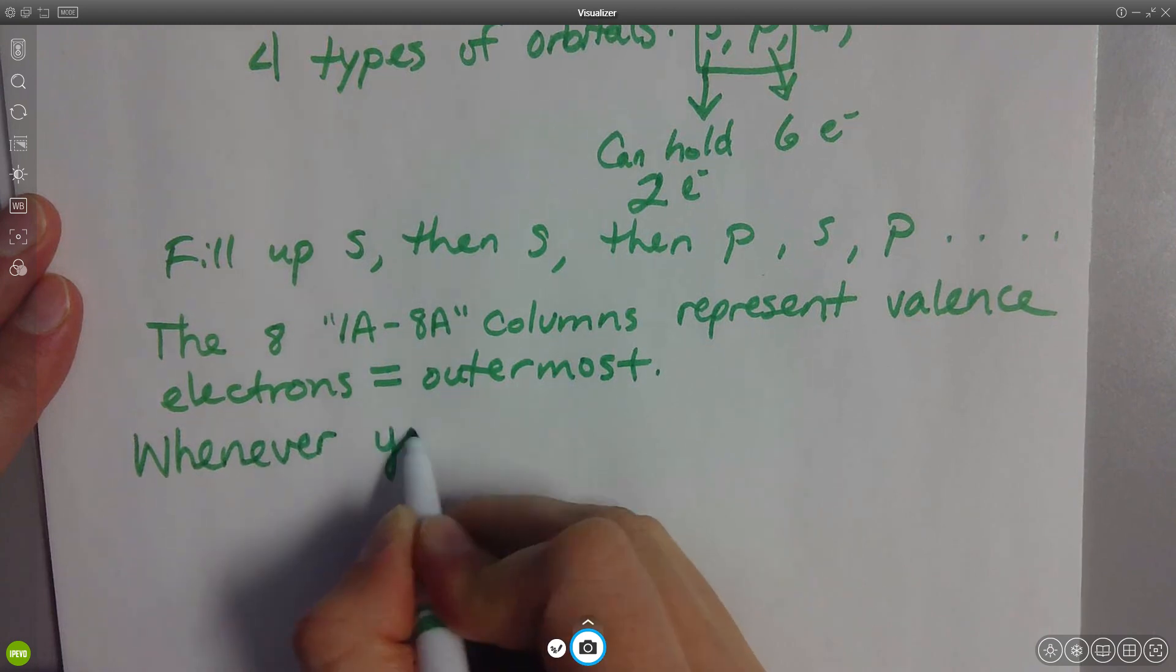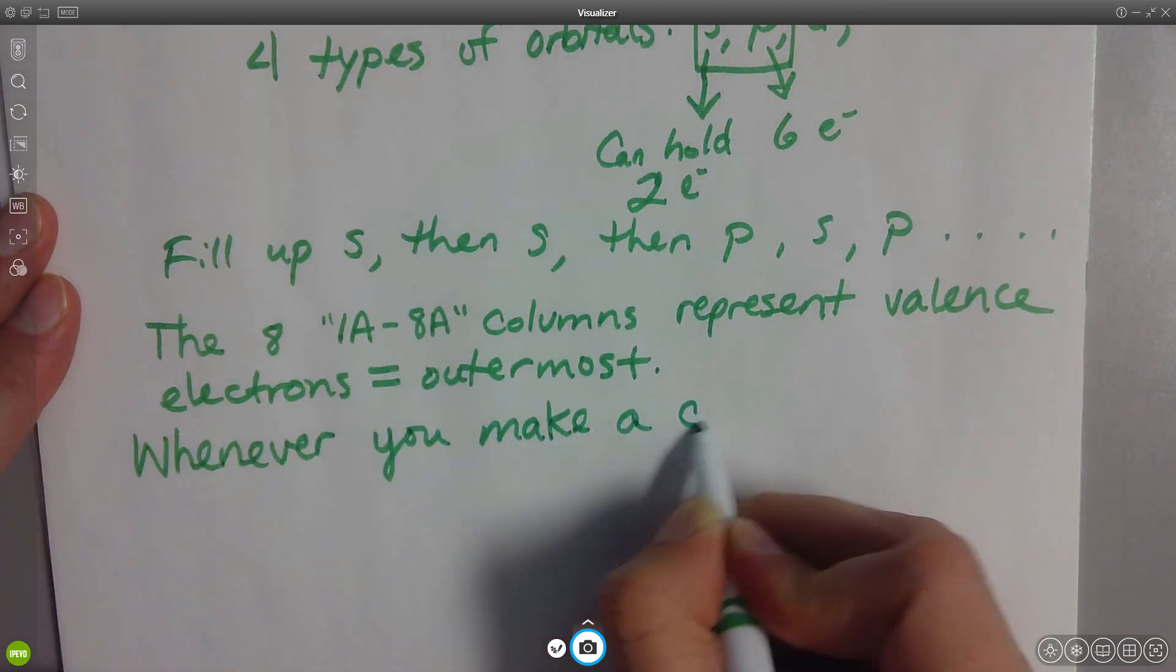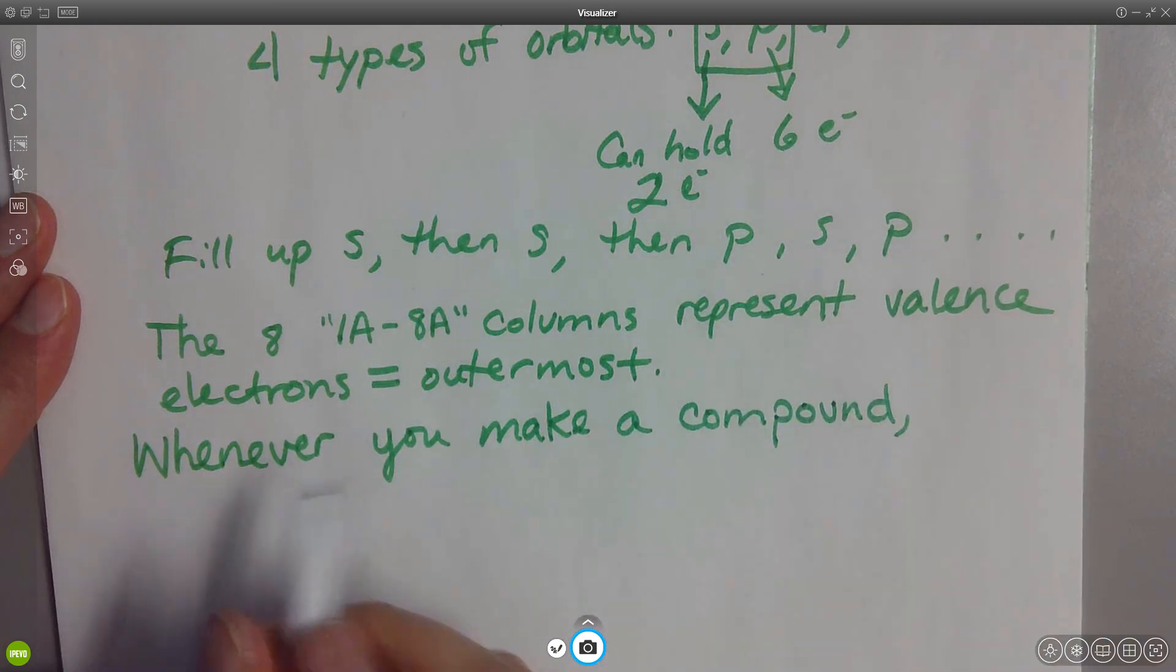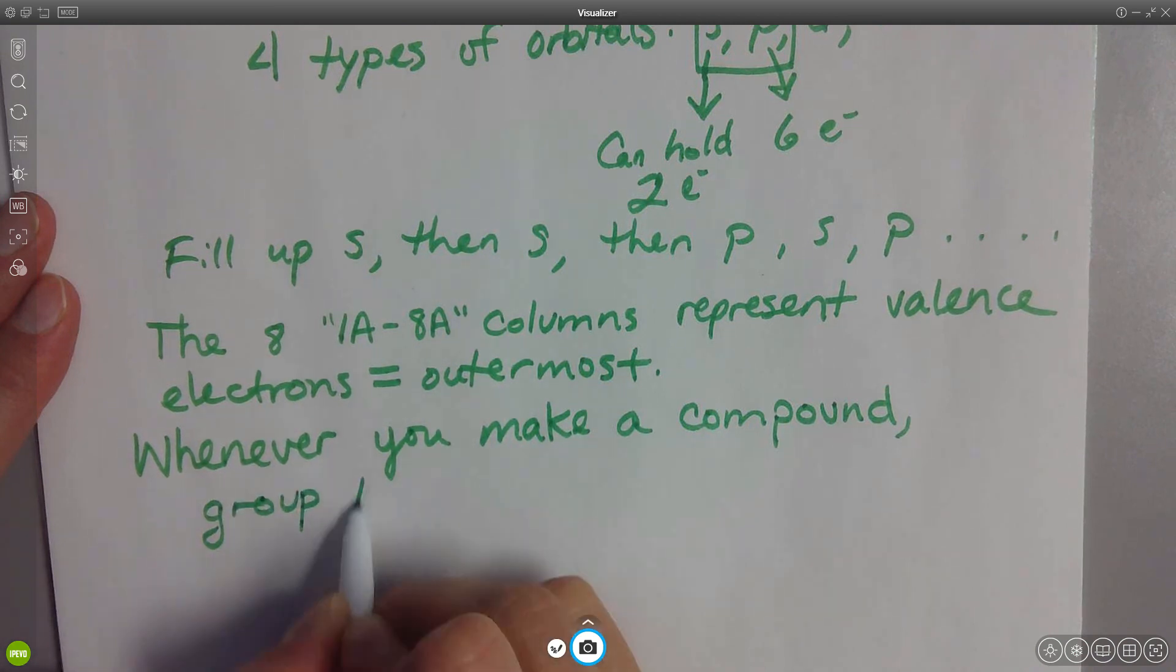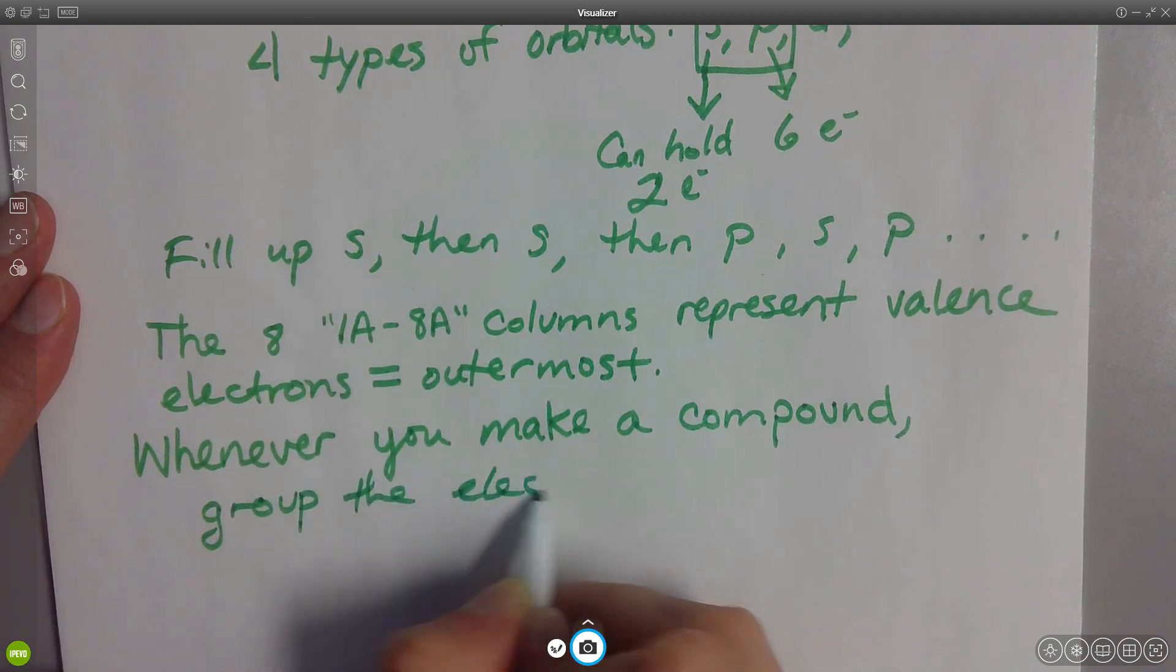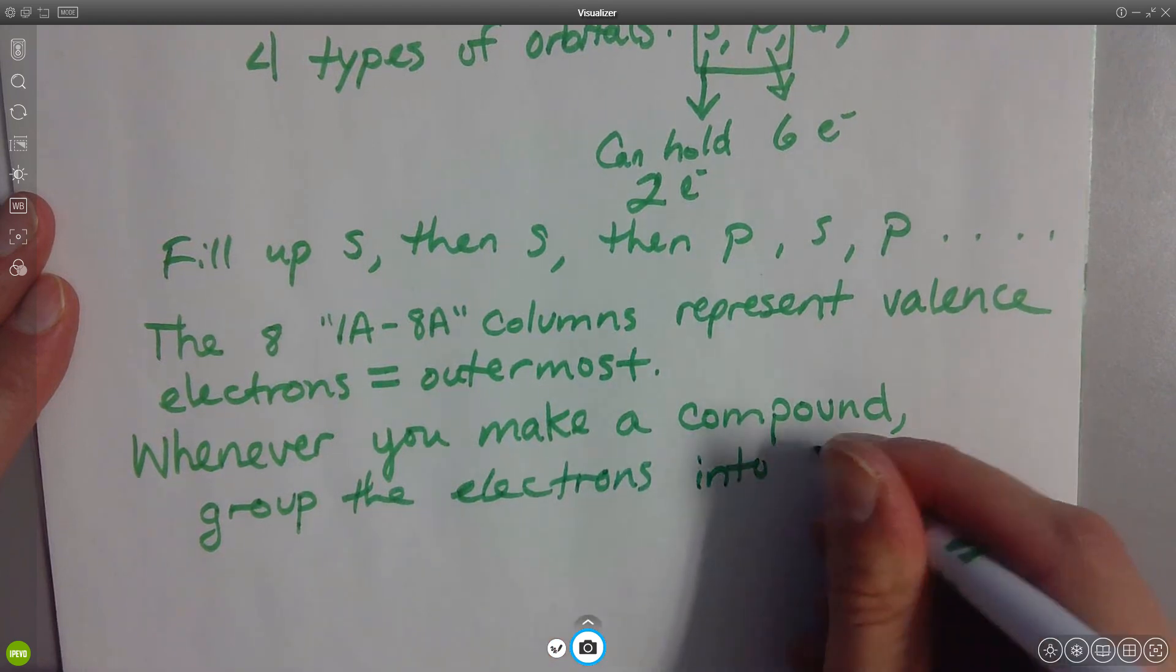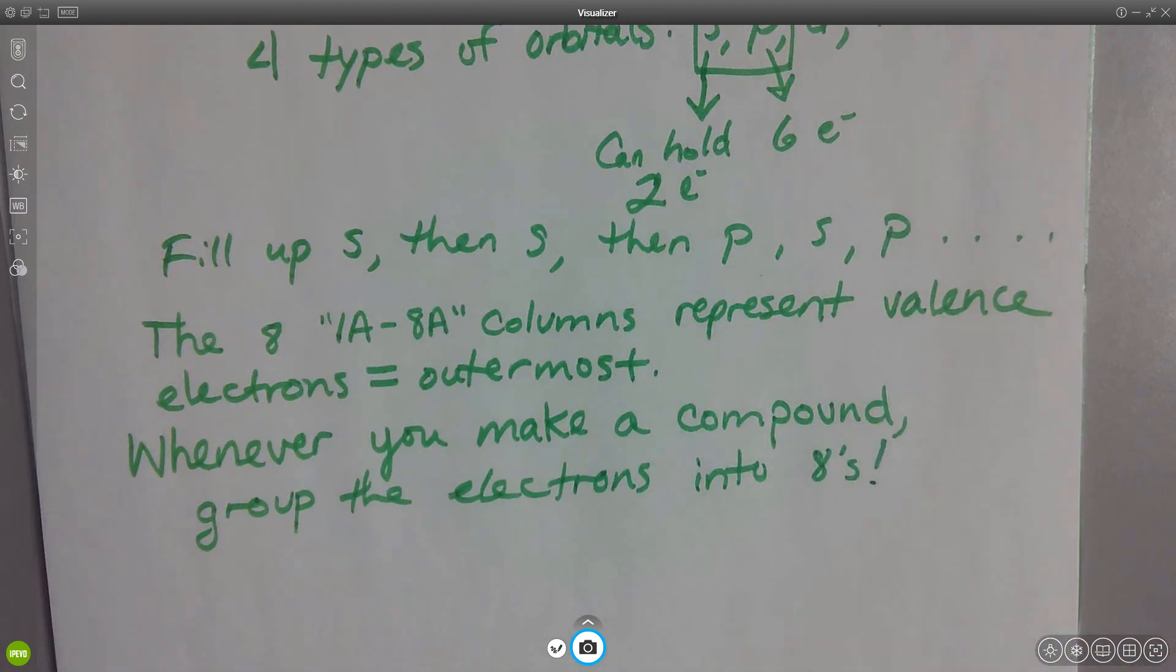Whenever you make a compound, group the electrons into eights. Does that make sense?